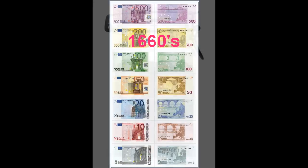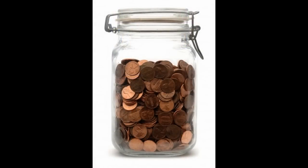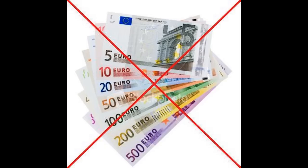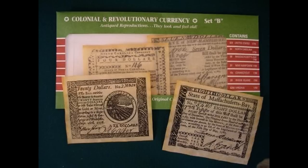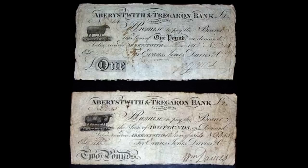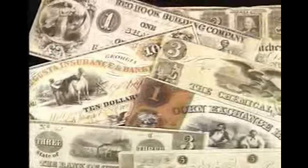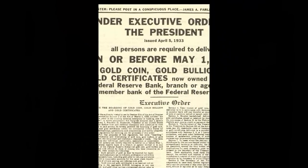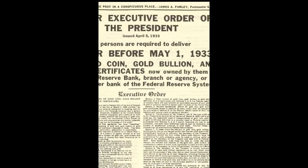In Europe, banknotes were issued in the 1660s, but when a bank ran out of coins — also known as becoming bankrupt — it simply ceased issuing banknotes in 1664. In the early 1690s, the Massachusetts Bay Colony was the first of the 13 colonies to issue banknotes. By the early 1700s, all of the colonies had their own colonial script.